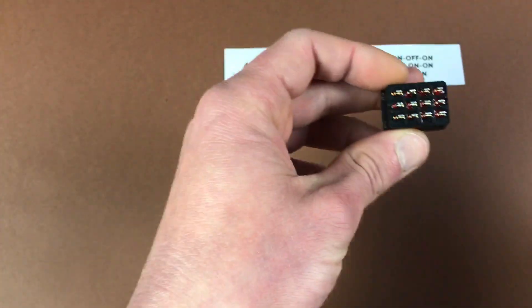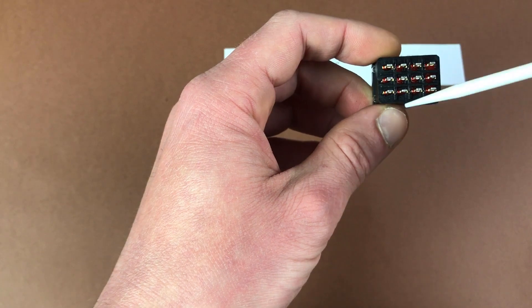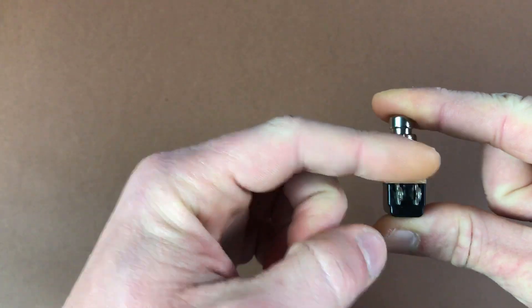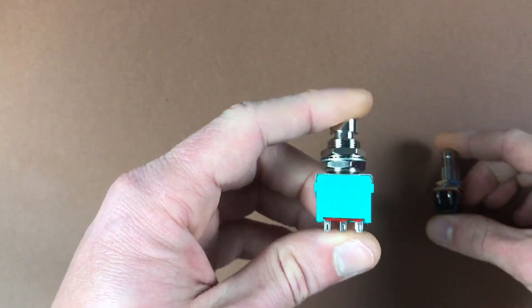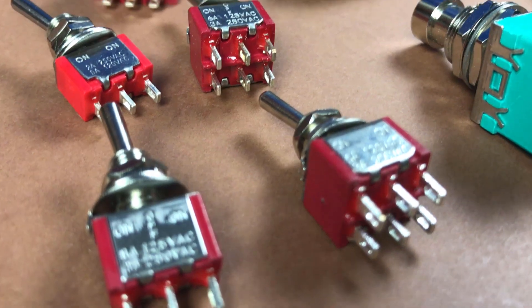And another extension it's four pole double throw switch. As you see this one is big. Actually it's pretty the same as three PDT just with another pole. Also I would like to mention you can buy momentary switch so it's active when you press it or latching one to switch between two stable states. So that's all for today.